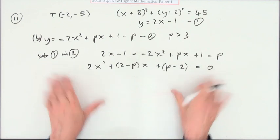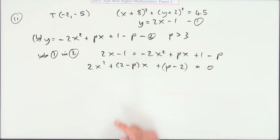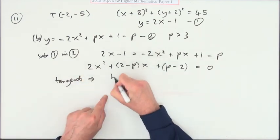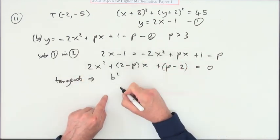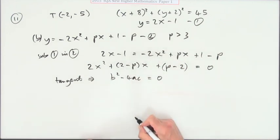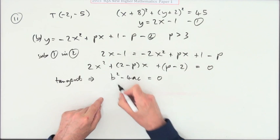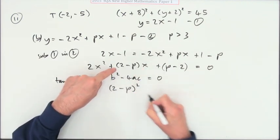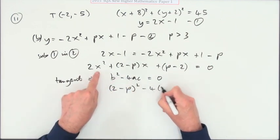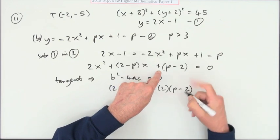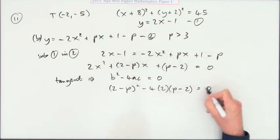Now, you know it's a tangent, and if it's a tangent there should just be the one solution, a pair of equal roots. So b² minus 4ac should equal 0. So what are they? Well, b is the coefficient of x, so that's 2 minus p, squared. 4 times a is the coefficient of x², and c is the absolute coefficient, the constant at the end.